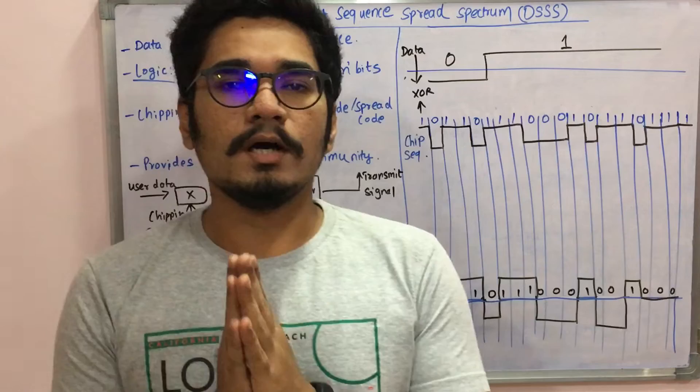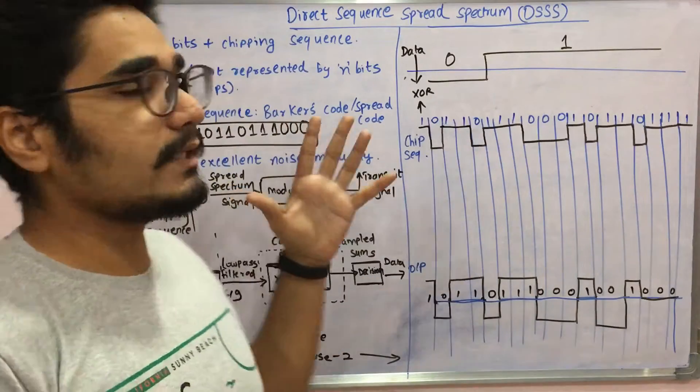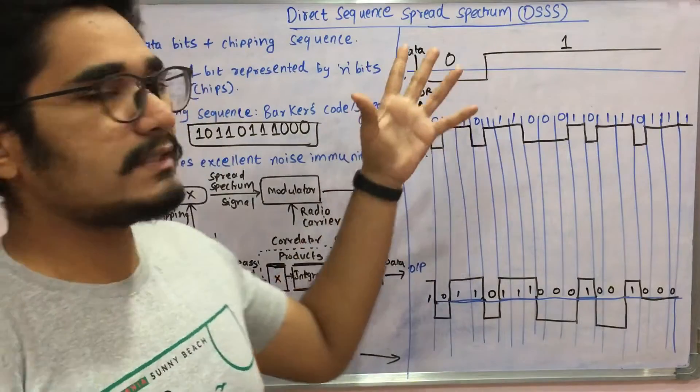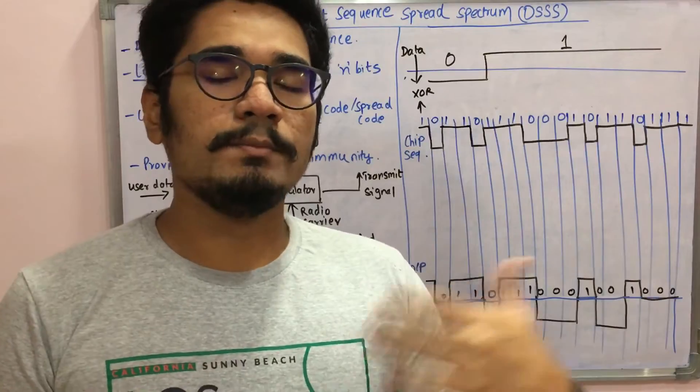We'll be talking about the very first one, the Direct Sequence Spread Spectrum, also called DSSS in short. The other one is Frequency Hopping Spread Spectrum that we'll be seeing in the other video.